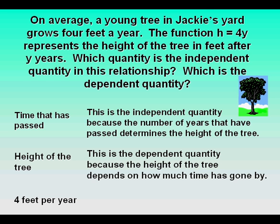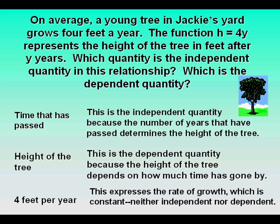The height of the tree is the dependent quantity because the height of the tree depends on how much time has gone by. Four feet expresses the rate of growth, which is the constant, so that number four is neither independent nor dependent.